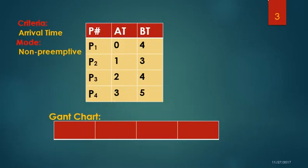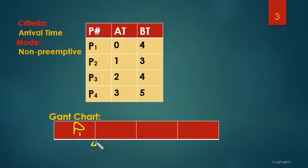I am going to start the Gantt chart from 0 because the Gantt chart always starts from 0. At time 0, P1 has arrived and it has a burst time of 4. So I will place P1 here with a burst time of 4, starting from 0.